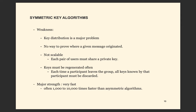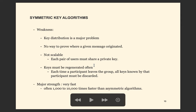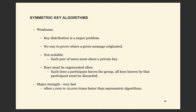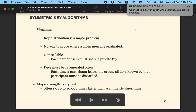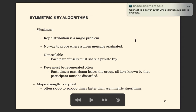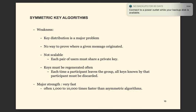As the number of users increases, the number of keys increases polynomially, so it is not very scalable. Also, the key must be regenerated often — if someone leaves the group and they know the key, or if you think the key has been compromised, you have to change it. But the major strength of the symmetric key algorithm is that it is very, very fast — usually 1,000 to 10,000 times faster than the asymmetric algorithm.